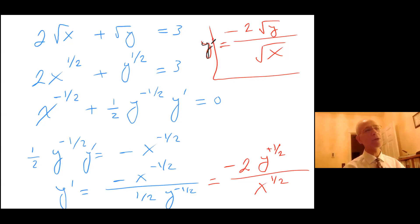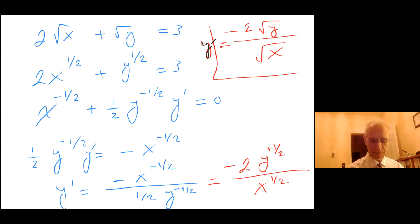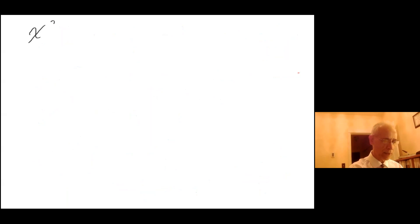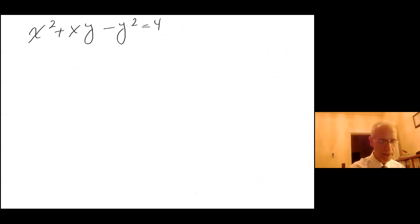All right, let's do a couple more on the next page. How about x squared plus x times y minus y squared equals 4.